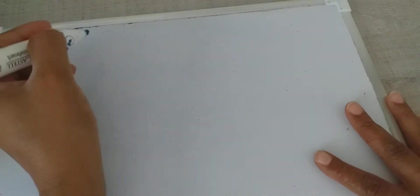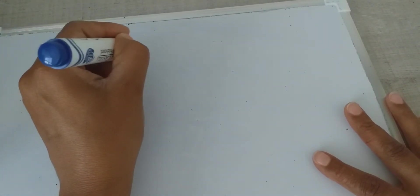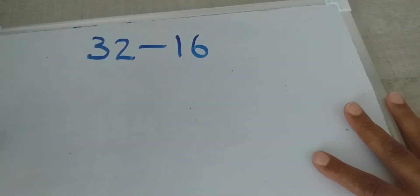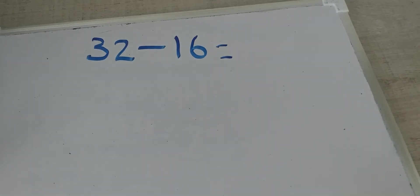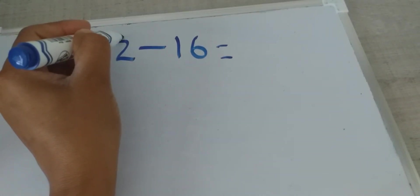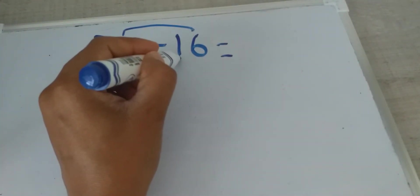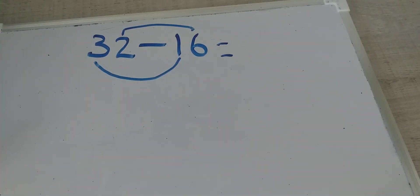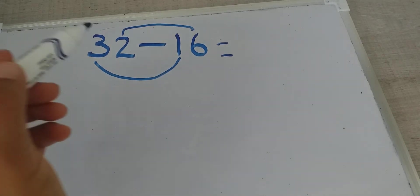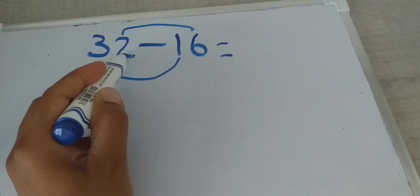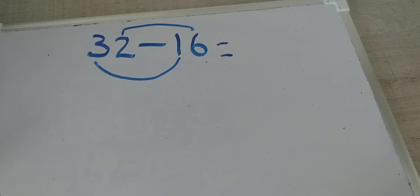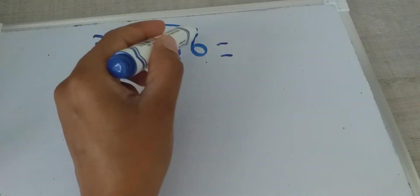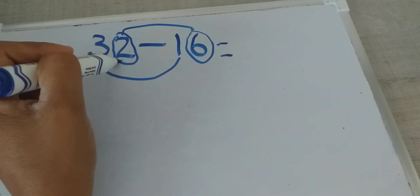Another question: 32 minus 16 — what is the answer? This is the ones house and the tens house. Now, 2 minus 6: what is the answer?